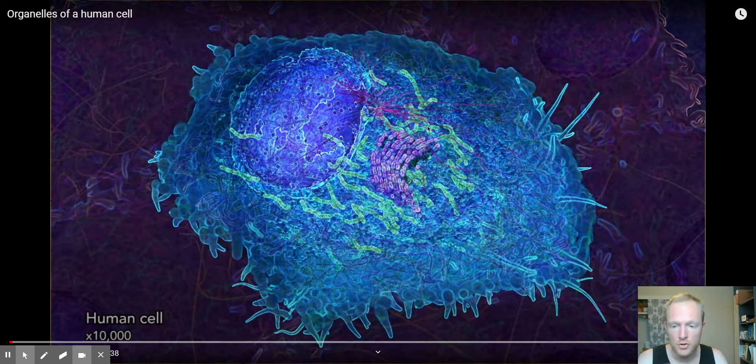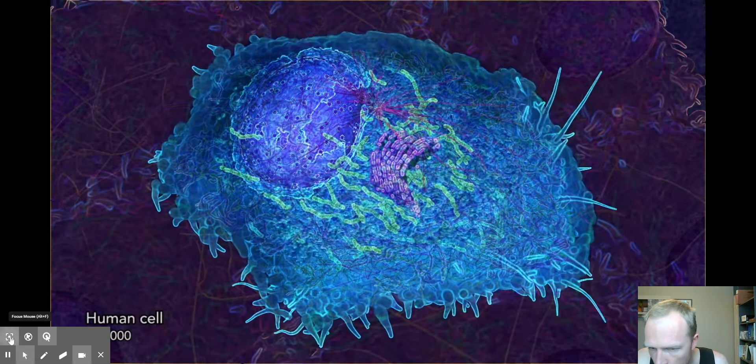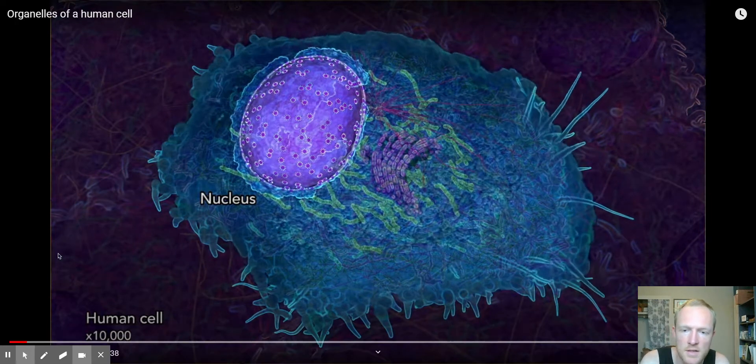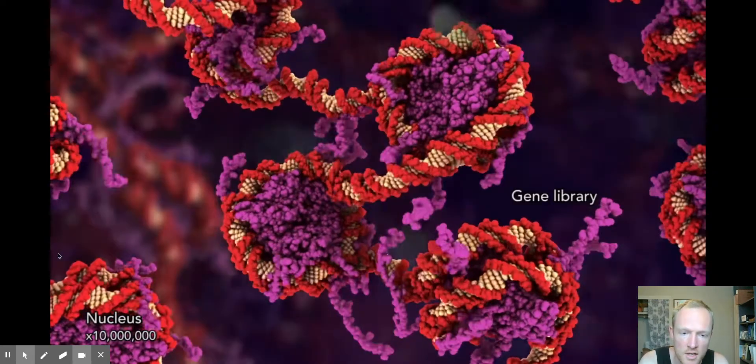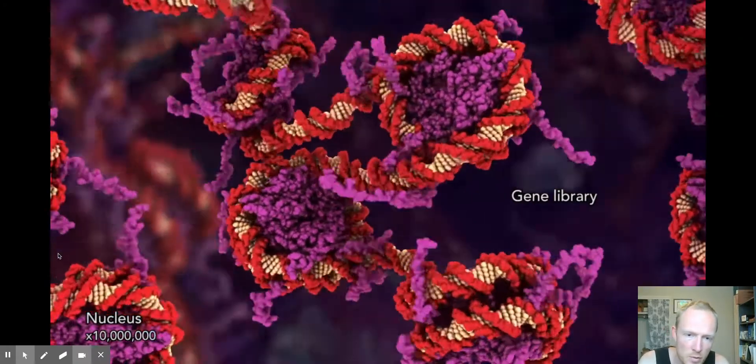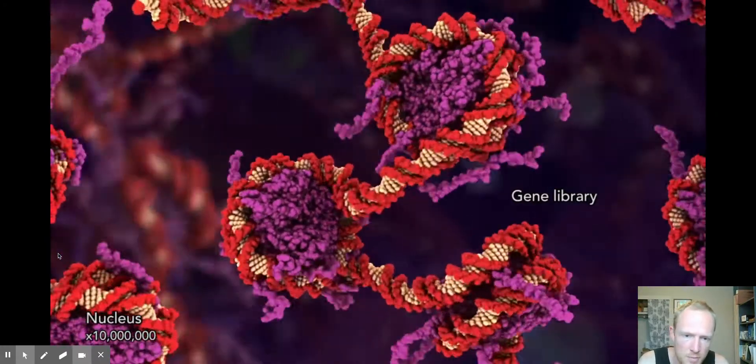All right, so this is a human cell. We've got the nucleus; we know that to be the container of all genetic material. Now zoomed in on the DNA, which is in red, it's wrapped around special proteins that help it package. These proteins are important to organize DNA during mitosis.